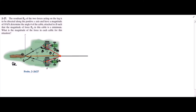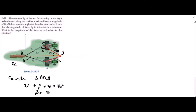If I consider triangle AOB, we know that the sum of interior angles of a triangle equals 180 degrees. So, 30 degrees plus beta plus theta equals 180 degrees. From here, beta is equal to 150 degrees minus theta. Let's call this equation 1.